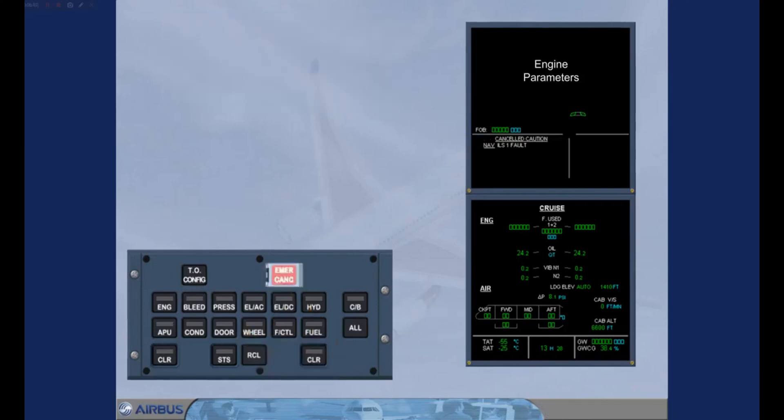As a result of pressing the emergency cancel push button, a white message appears on the engine warning display. After a short delay, the cancelled caution message automatically disappears and is transferred to the status page. A status reminder appears on the engine warning display, informing you that there is something on the status page.